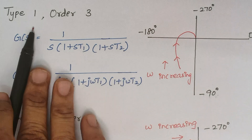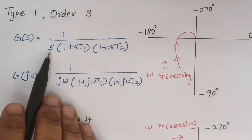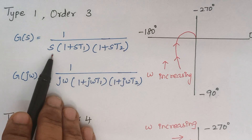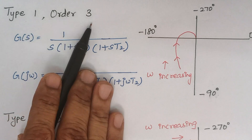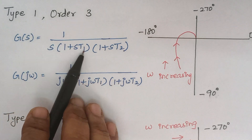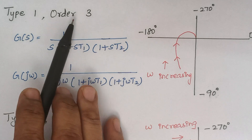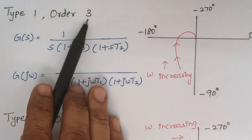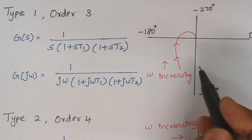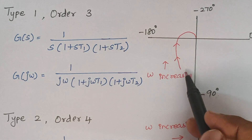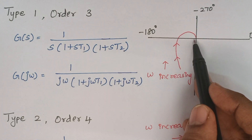The next one is type 1, order 3. Here we have one individual s in the denominator, so it is type 1. When you multiply the three terms the maximum power is s cubed, so the order is 3. For a type 1, order 3 system the polar plot will start at a specific position and end at minus 270.